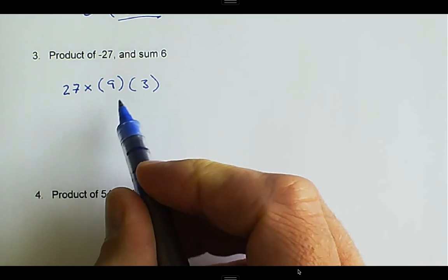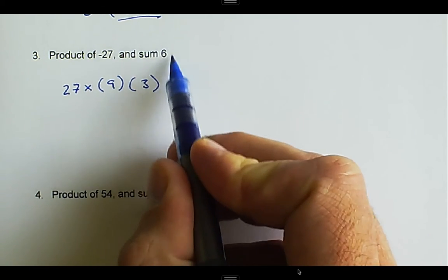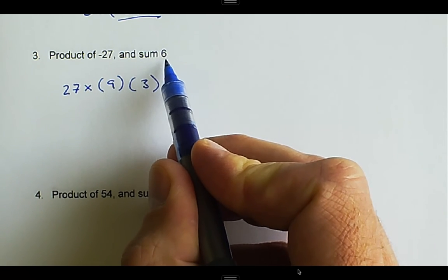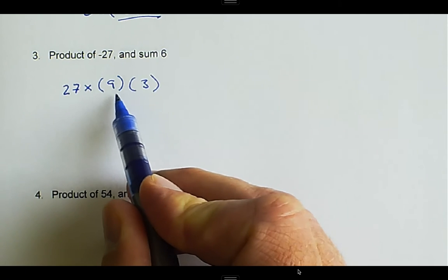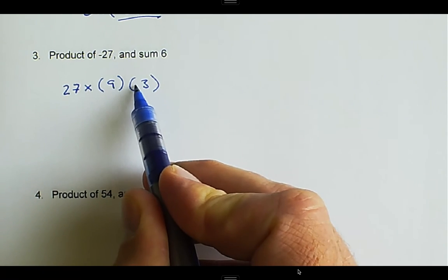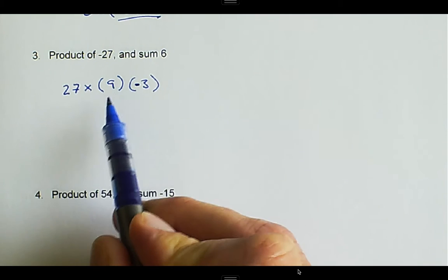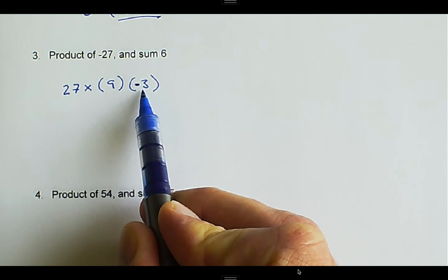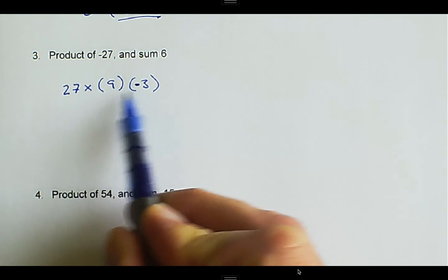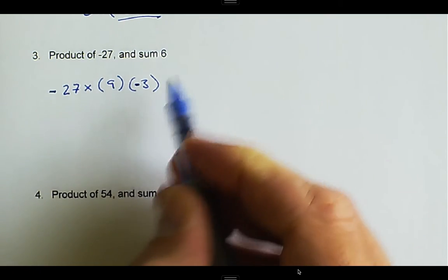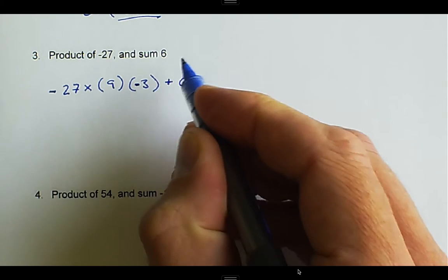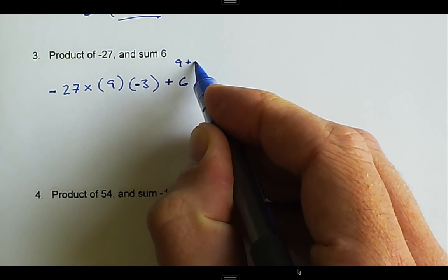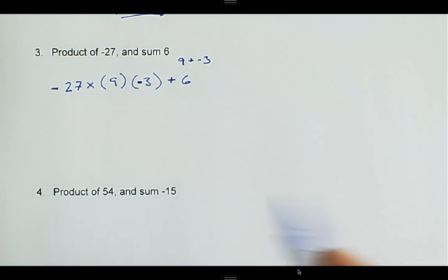What we want to do is say, we want it to be positive. Two numbers added together to be positive. In order for that to happen, the larger number here has to be positive. 9 is the larger number, we're going to leave that positive. We make the 3 negative. 9 times negative 3 is negative 27, and 9 plus negative 3 is equal to 6. So 9 and negative 3 are the numbers.